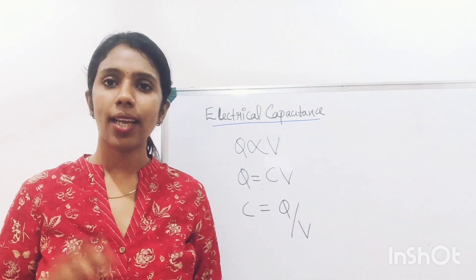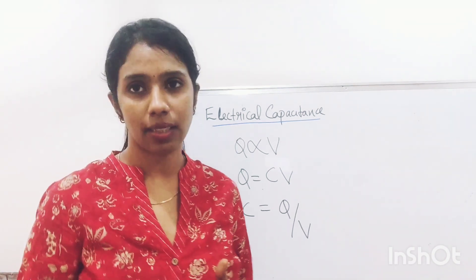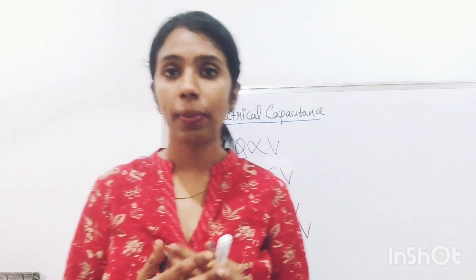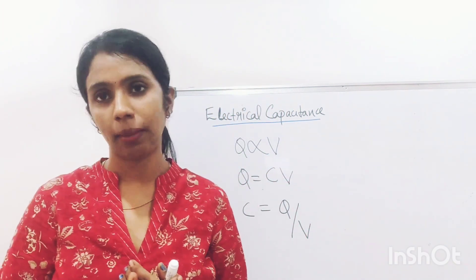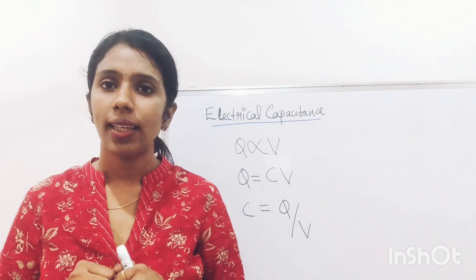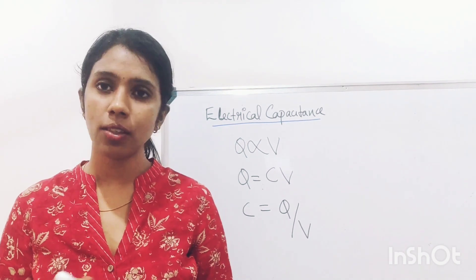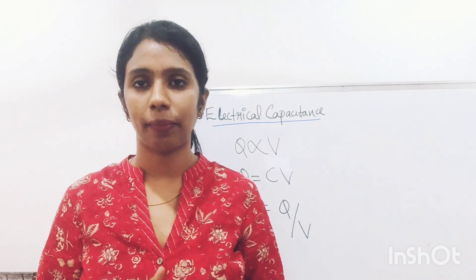The electrical capacitance of a conductor may depend upon certain factors. It depends upon the size and shape of the conductor. It also depends upon the nature of the surrounding medium, meaning the permittivity of the medium, and upon the presence of other conductors in the surrounding medium.